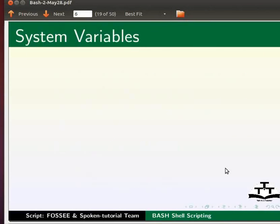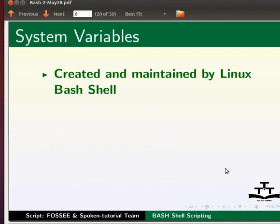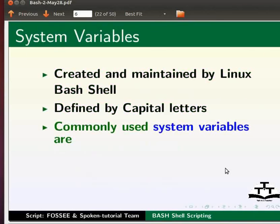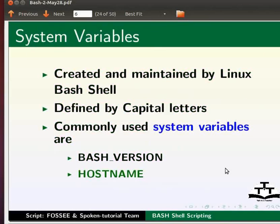System variables are created and maintained by the Linux Bash shell itself. They are defined by capital letters. Commonly used system variables are BASH_VERSION, HOSTNAME, HOME, etc.